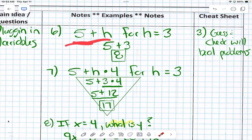5 plus H. If I tell you that H is 3, what's the first thing you're going to do? We write. 5 plus H times 4. What's the first thing you're going to do? We write. But then because we have more than one operation, we're going to use what to solve? Order of operations. Which is order of operations, right?